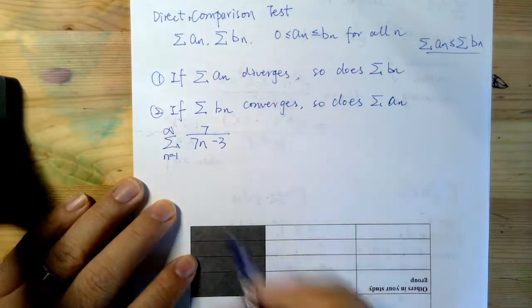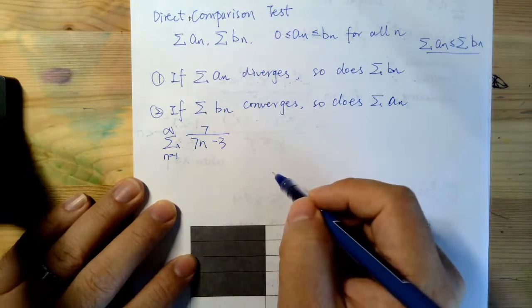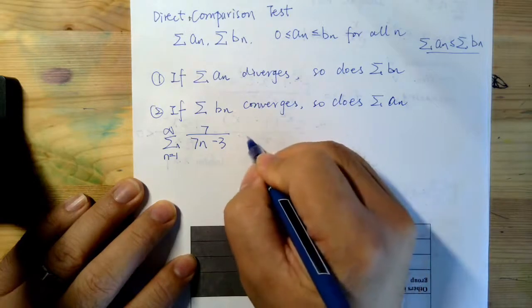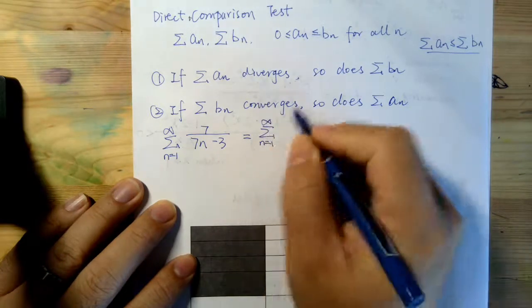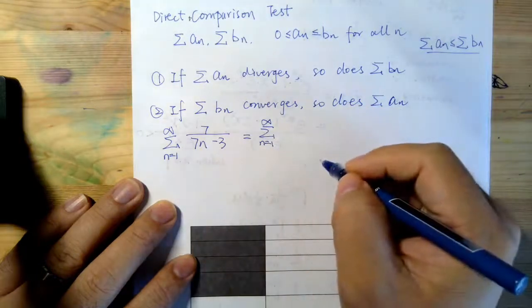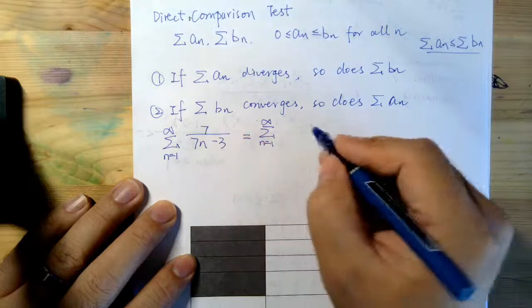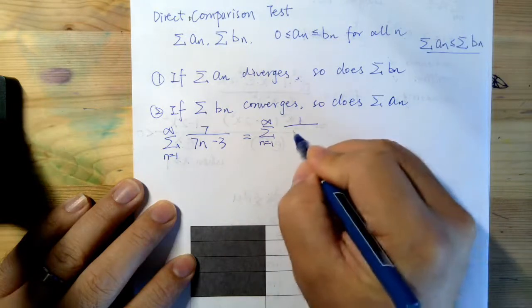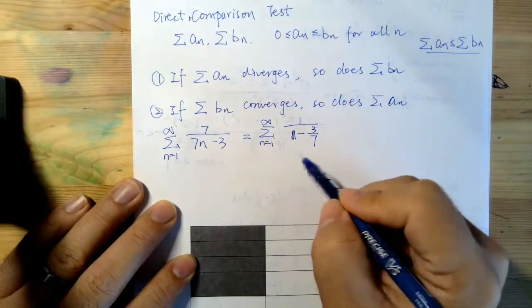And so I want to know whether this series converges or diverges. And it turns out we can simplify a little bit about this series. If we divide 7 on top and bottom, that gives us this 1 over n minus 3 over 7.